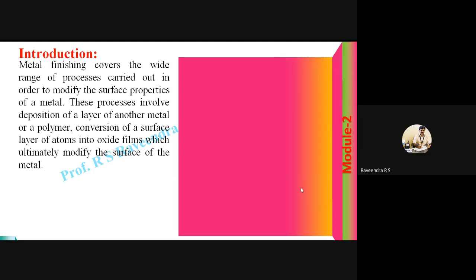Coming to the introduction of Metal Finishing. Under this headline, we are going to know what you mean by Metal Finishing, how to define the term Metal Finishing, where it is applicable, and why it is applicable. We all know that Metal Finishing covers a wide range of processes. What processes? Why these processes are useful for us? These processes are carried out in order to modify the surface properties of a metal.